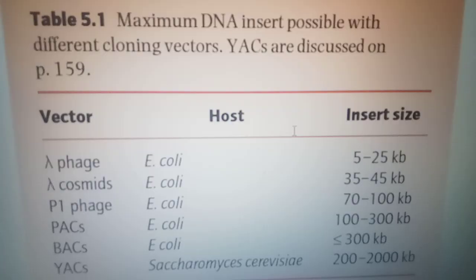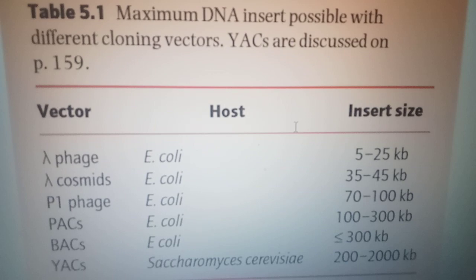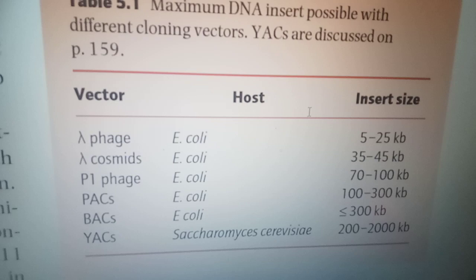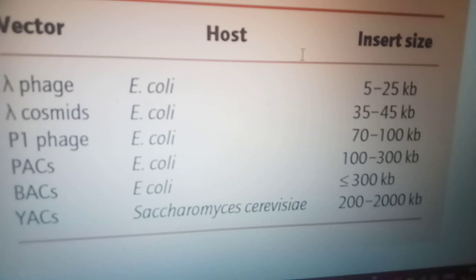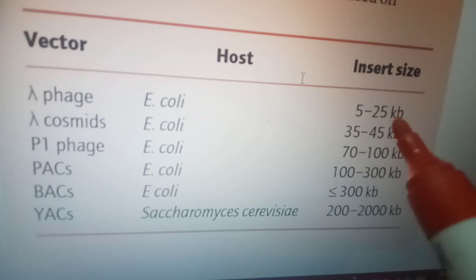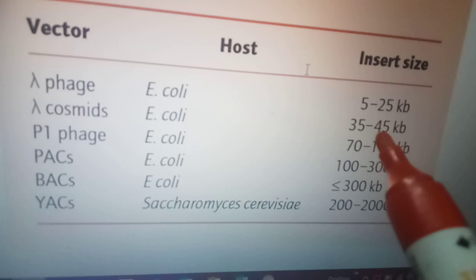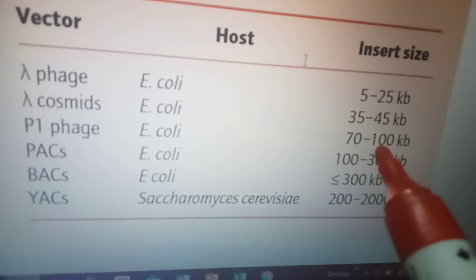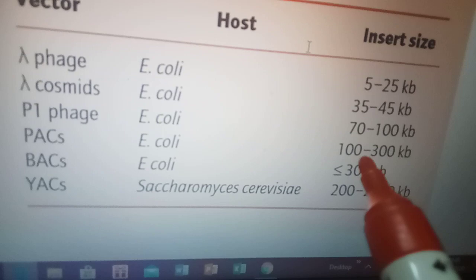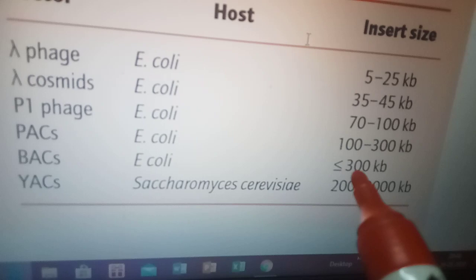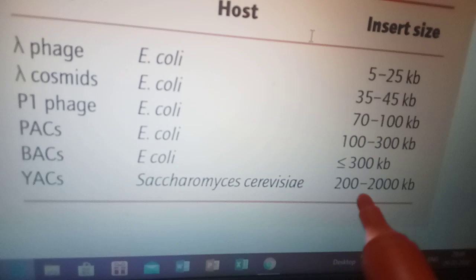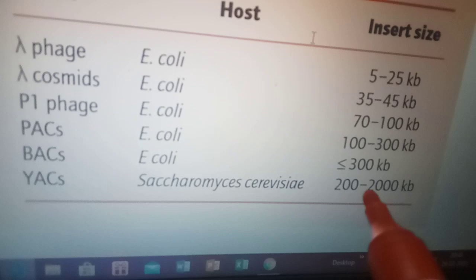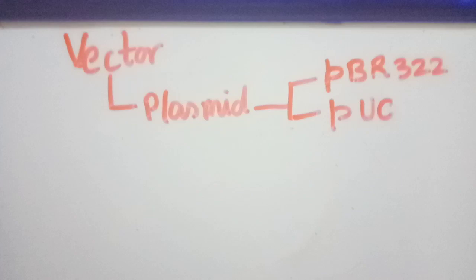We can see the maximum insert size in various vectors: lambda phage has insert size of 5 to 25 kilobase pair, cosmid 35 to 45, P1 up to 100, PAC up to 300, and YAC approximately up to 2000 kilobase pair. But as we are increasing the size, there is a stability problem.